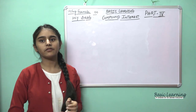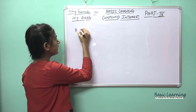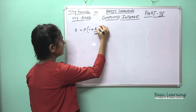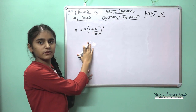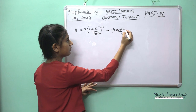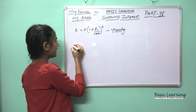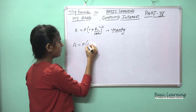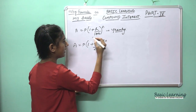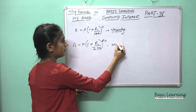Now here I am going to show you questions related to using the formula on a half-yearly basis. The formula for yearly basis was A = P(1 + R/100)^n. Now for half-yearly basis, the formula is A = P(1 + R/200)^2n. You can see the difference clearly between the yearly and half-yearly basis.